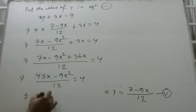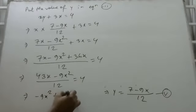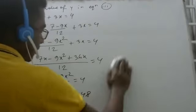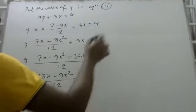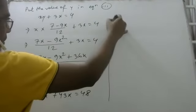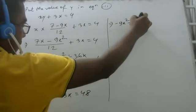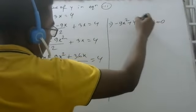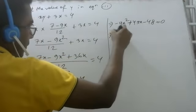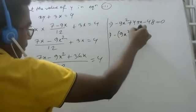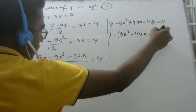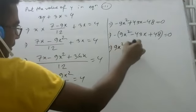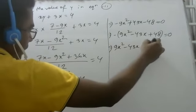So x minus 9x squared plus 43x is equal to 48. Rearranging: minus 9x squared plus 43x minus 48 is equal to zero. Taking minus common gives us 9x squared minus 43x plus 48 is equal to zero.